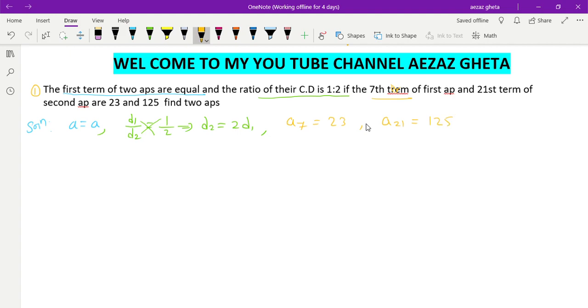the second AP is 125. We need to find the two APs. For the solution: a7 = 23 from the first AP, so I will write a + 6d1 = 23 as equation 1. For the second AP, a21 = 125, so a + 20